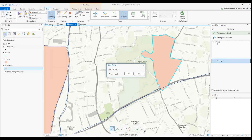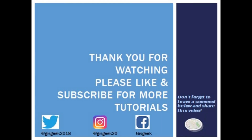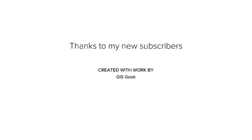So today we edited using the trace tool and we used the direction and distance function. In the next ArcGIS Pro tutorial, we get started with displaying data by symbolizing and labeling. As usual, thank you so much for watching and please don't forget to like, subscribe, and share this tutorial with a friend or colleague who would benefit from this information. Leave a comment below to let me know how you like the tutorials or if there are other tutorials you'd like to see. Thanks again and see you next time.